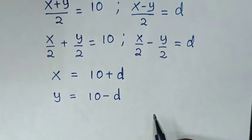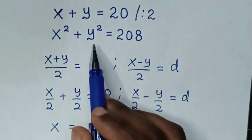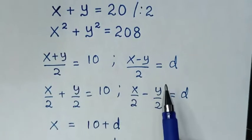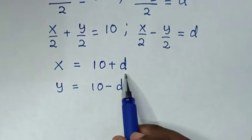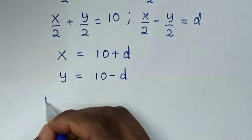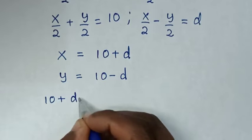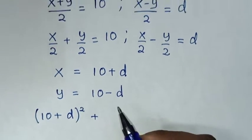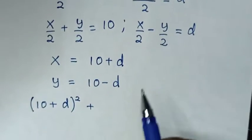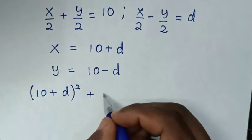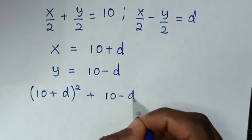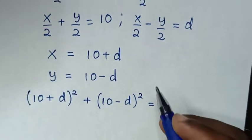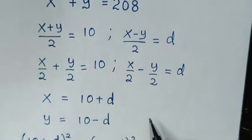Then from the second equation, which is x squared plus y squared is equal to 208. From x squared, x is 10 plus d, so it will be (10 plus d) squared. Then plus from y squared, y is 10 minus d, so it will be (10 minus d) squared, is equal to 208.